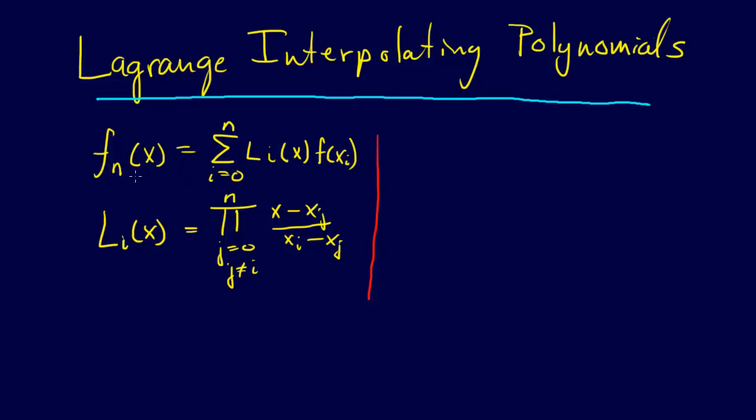This is just the nth order polynomial, fn of x. So if we're doing two points, it'll be first order. If we're doing three points, it'll be second order, a quadratic, and so forth. So let's write out f1 of x.